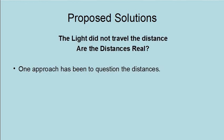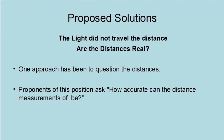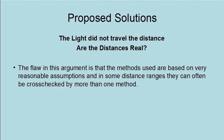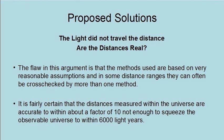The light did not travel the distance — are the distances real? One approach has been to question the distances. Proponents of this position ask, how accurate can the distance measurements be? This is because large distances cannot be measured directly. The flaw in this argument is that the methods used are based on very reasonable assumptions, and in some distance ranges, they can often be cross-checked by more than one method. It is fairly certain that the distances measured within the universe are accurate to within about a factor of 10, not enough to squeeze the observable universe within 6,000 light years.